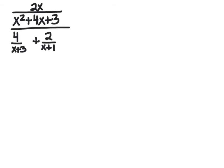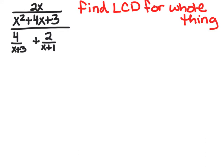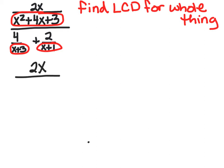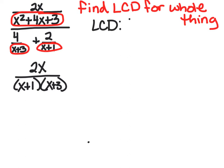I have one more example, and this time I'll use a different method. You don't have to use either one — pick the one you like. The first method, flip and multiply, is probably easier but sometimes takes longer. This second method works well if you're comfortable with fractions. Instead of simplifying top and bottom separately, we find a lowest common denominator for the entire expression. We first factor the numerator: 2x over x squared plus 4x plus 3, which factors as x plus 1 times x plus 3. That's also what's in the bottom, so our LCD is x plus 1 times x plus 3.